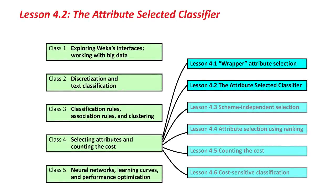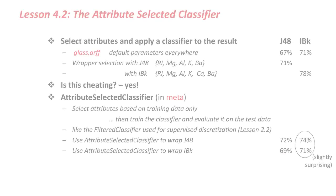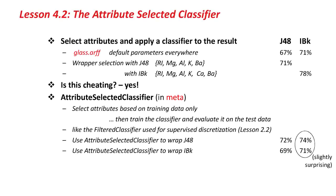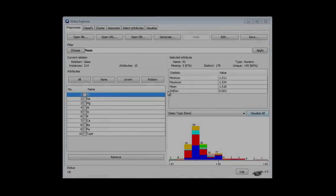Hello again. This is lesson 4.2, and we're going to learn about a new classifier: the attribute-selected classifier. We're going to open a dataset, glass.arff, and apply J48 to see what we get. Then we're going to use wrapper attribute selection with J48 to see what attributes that gives us. Then we're going to use just those attributes and run classification with J48 again on the new dataset. Let's go over to Weka and try it.